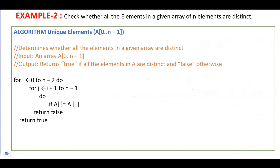Now we go to another example: checking whether all elements in a given array of n elements are distinct. We check that all elements are unique with no duplicates. The input is array A with elements from index 0 to n-1, and the output returns true if all elements are distinct, otherwise false.